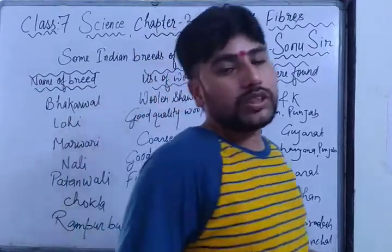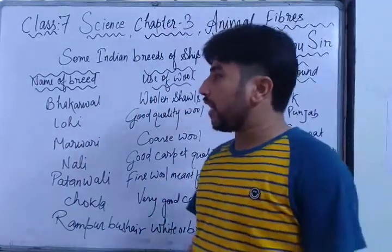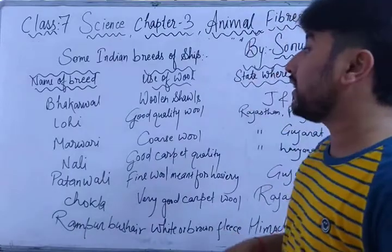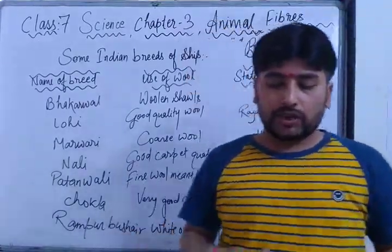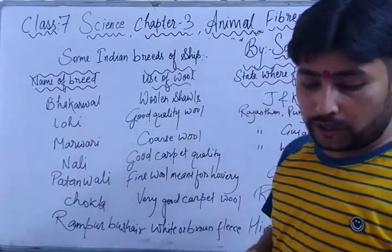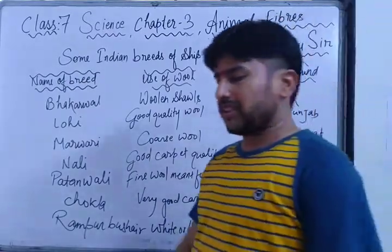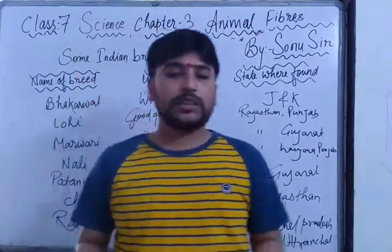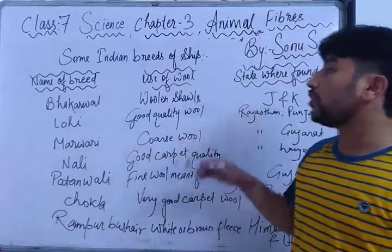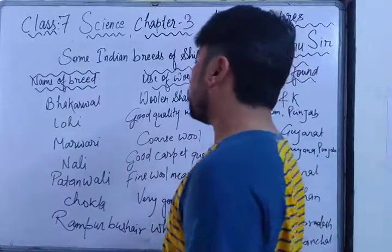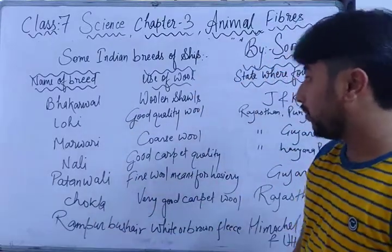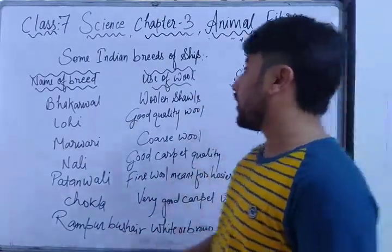Sheep are reared for their wool in countries around the world with different climatic conditions, including dry regions with low rainfall. Sheep are reared in large open areas. When sheep are reared, selective breeding is practiced — selecting which breed to use depending on the required product. Here, we have the breed name, the uses of that breed, and the state where that breed is found.